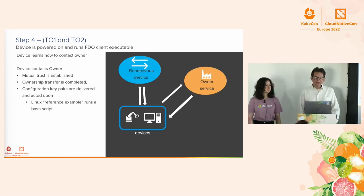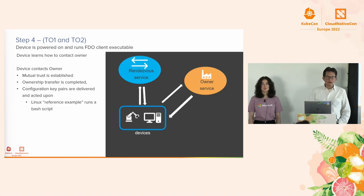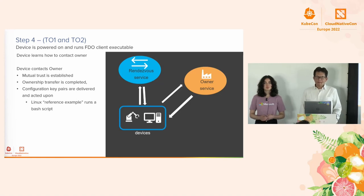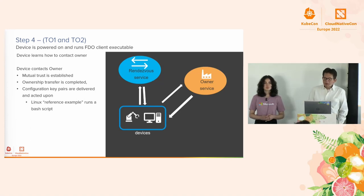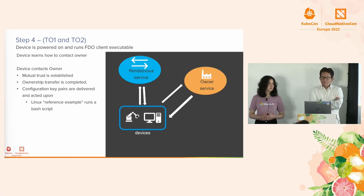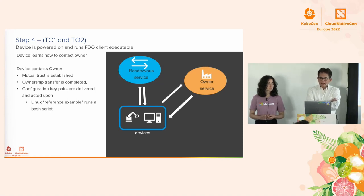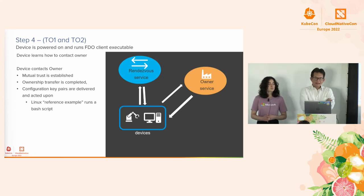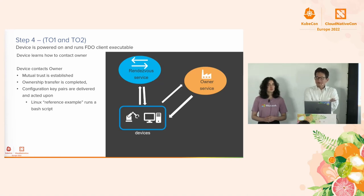The device is powered on. It first contacts the rendezvous server, gets quickly redirected to the owner address where an owner server is being hosted, and then connects to the owner server where it gets a device profile that drives the initialization. The owner-to-device transactions support mutual establishment of trust over a secure channel, followed by delivery of a series of key-value pairs. The reference implementation for the Linux client is pretty simple: the device gets a bash script and executes it. This connection isn't intended to support bulk transactions of large blobs such as an OS image; instead, you use it to set up credentials and instructions to establish a secondary channel for delivery of bulk artifacts.